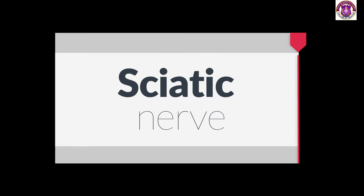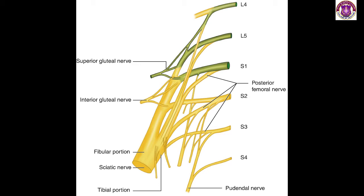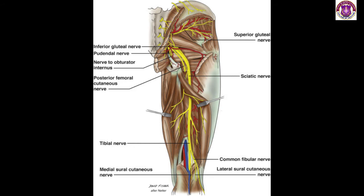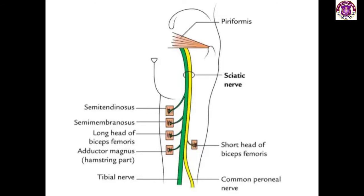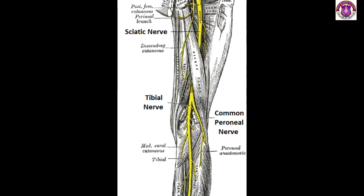Now we will discuss the sciatic nerve. It is the largest nerve in the body and arises from the sacral plexus from branches of L4, L5, S1, S2, and S3. It runs down the posterior leg and supplies the posterior compartment of the thigh. It passes under the piriformis and exits the pelvis via the greater sciatic foramen. The sciatic nerve is a combination of the tibial part and the common peroneal part enclosed by connective tissue, and it terminates just above or at the angle of the popliteal fossa, dividing into the tibial nerve and the common peroneal nerve.